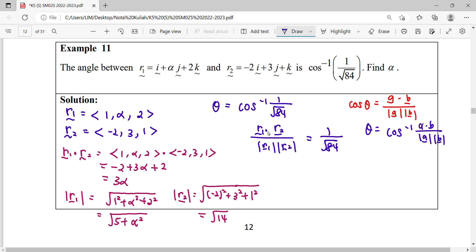Substitute our dot product 3 alpha magnitude, so square root 5 plus alpha square, square root 14. So we need to solve this equation.